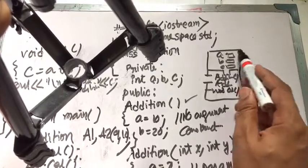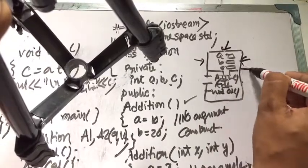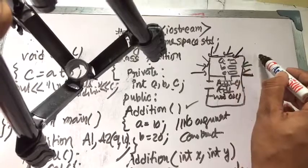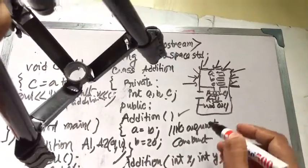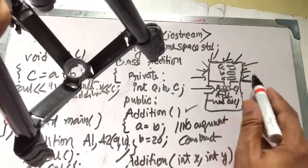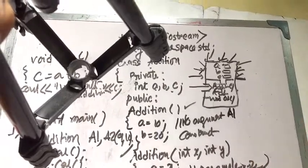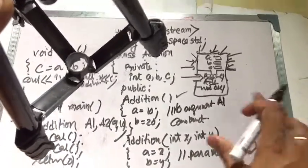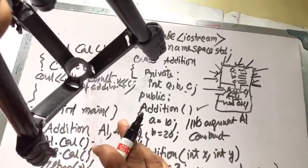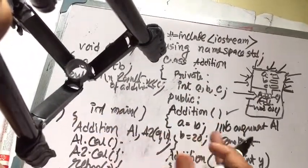The private section means no direct access is allowed from outside. Main can only access the public section. The class is a logical structure and the object is the physical structure — the variable of the class.